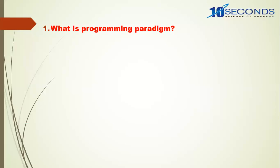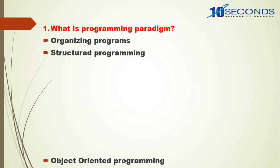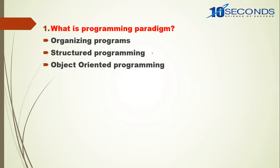What is a programming paradigm? A programming paradigm means the way in which we organize programs. There are two basic paradigms: structured programming and object-oriented programming. C is an example of structured programming; C++ and Java are examples of object-oriented programming. In structured programming we give importance to functions and data moves freely between them, but in object-oriented programming we give importance to data.